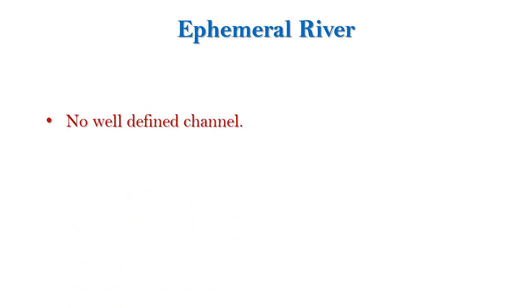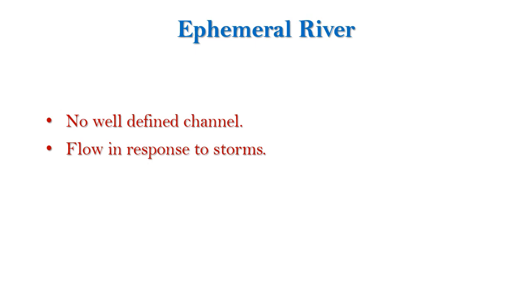Next is ephemeral rivers. These rivers generally don't have any well-defined channel, and they have flow only when there is heavy rainfall or snowfall in that area — otherwise, most of the time they don't have any flow. For example, we have river Looney. Generally, rivers in arid regions are of ephemeral kind. I hope these three types of rivers are clear to you.